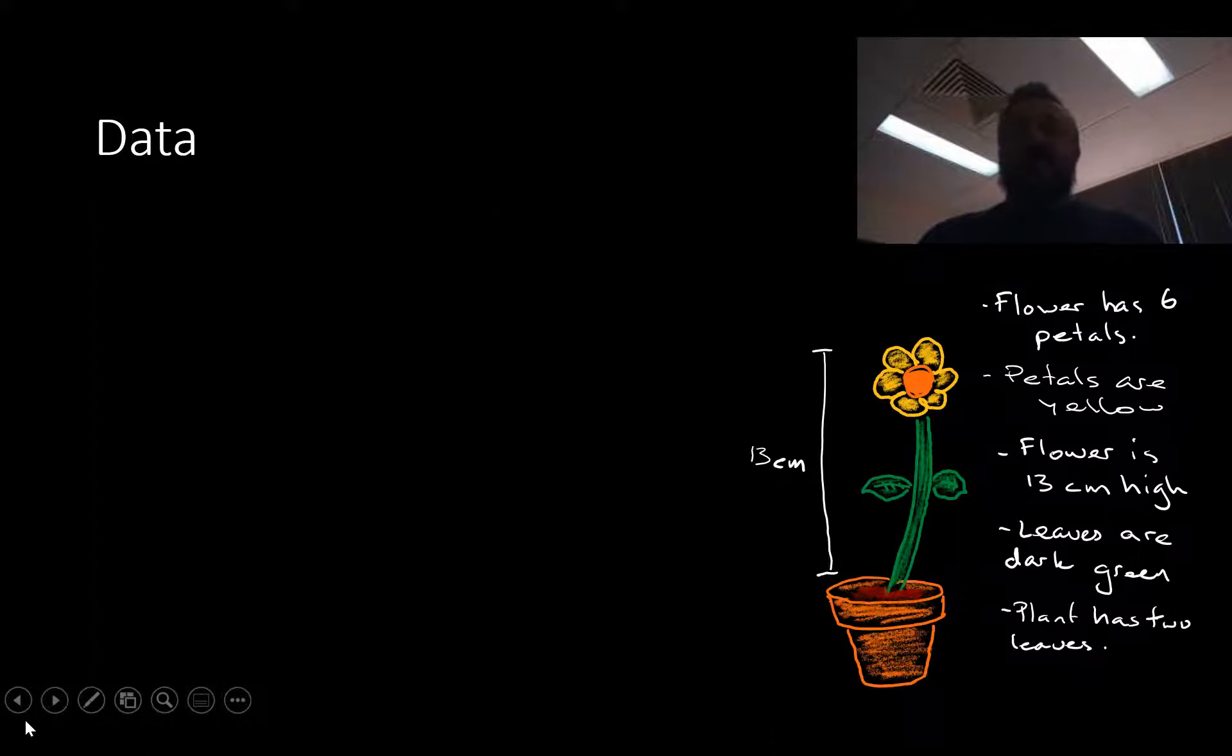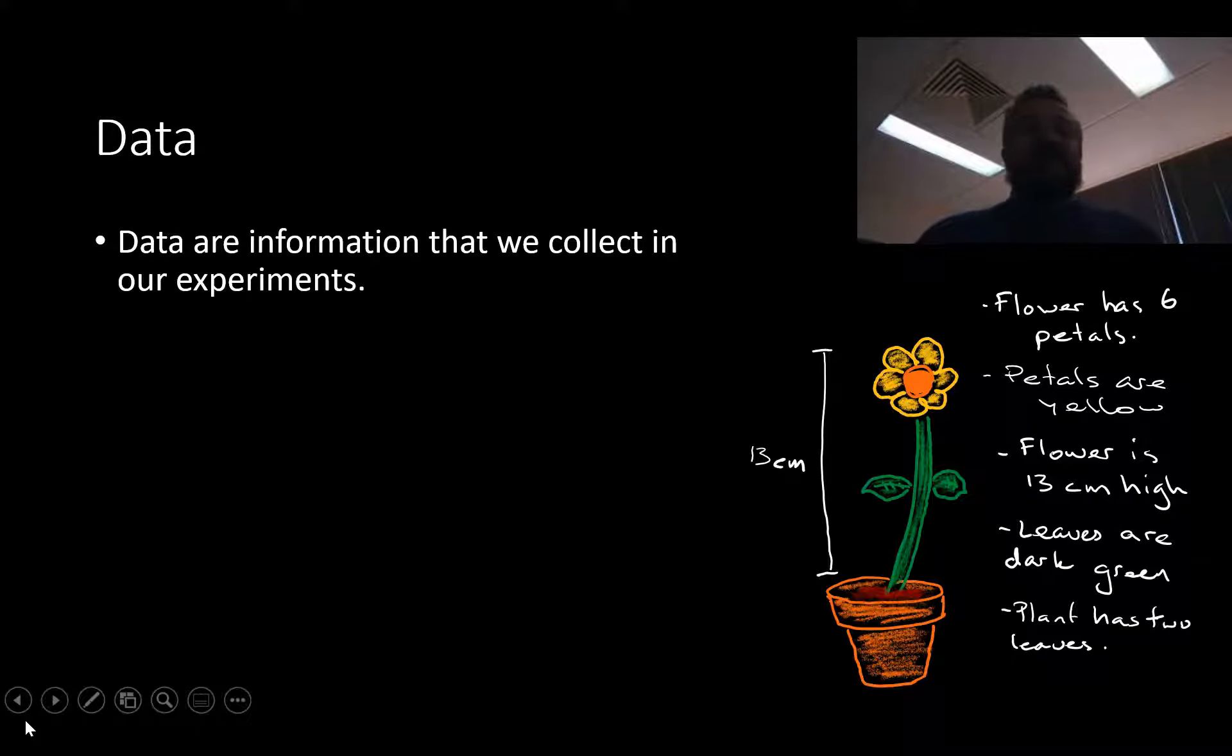Okay, so here we have a flower. The flower has six petals, the petals are yellow, the flower is 13 centimeters high, the leaves are dark green, and the plant has two leaves. So with that, what we want to know is, what is data? Data is pretty much information that we can collect from our experiments, so there's stuff we can learn.